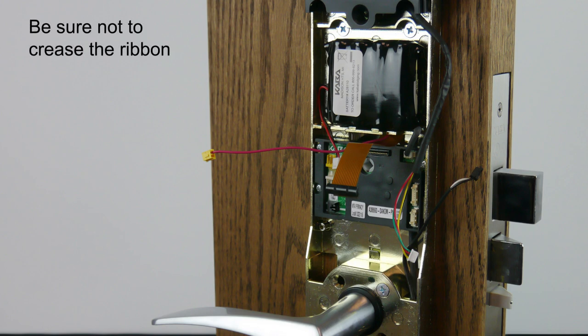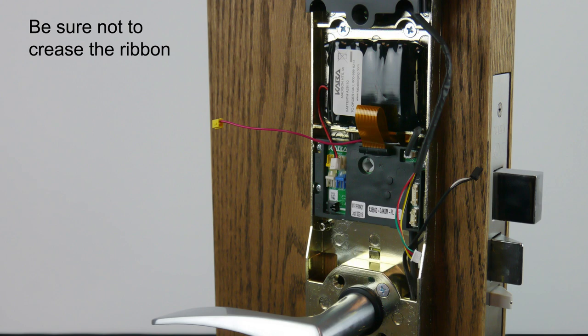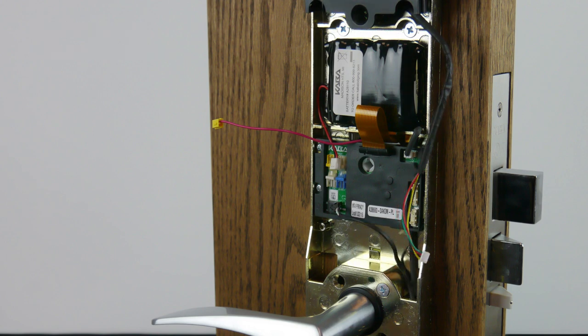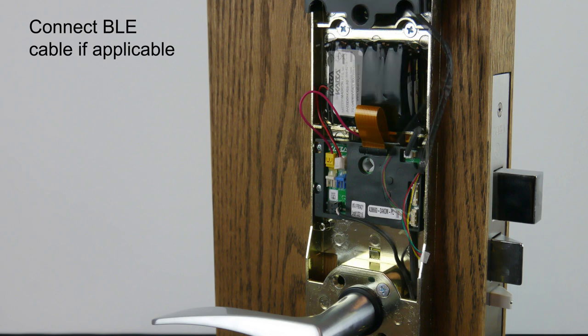Next, connect the reader ribbon cable to the printed circuit board and make sure not to crease the ribbon cable. Connect the reader power cable and motor cable. Optionally, connect the BLE cable.